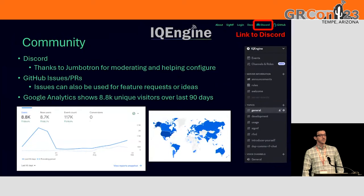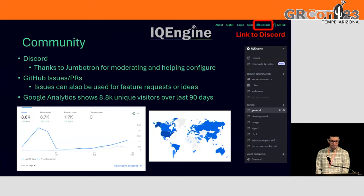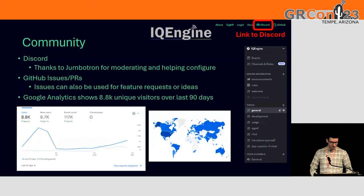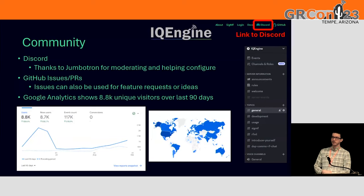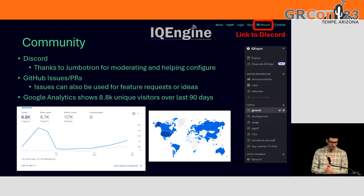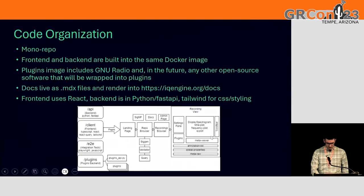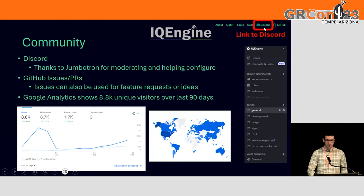We have a Discord server — a big thanks to Jumbotron for moderating and helping configure it. If you're not into Discord, you can use the GitHub system to make an issue for either a feature request or just an idea. We also have Google Analytics running on iqengine.org, configured to only grab minimal information — for example, ensuring there's no way it can get a file name from a local recording someone was analyzing. We're currently at 8,000 unique visitors over the last few months across the globe. There's a link to the Discord in the top right if you're on iqengine.org.